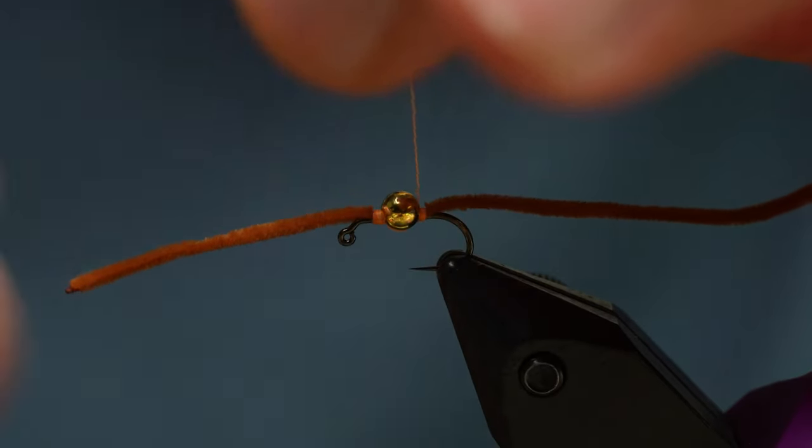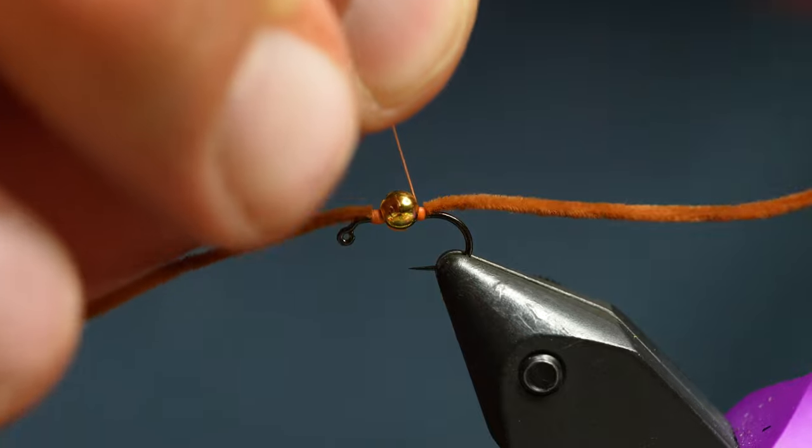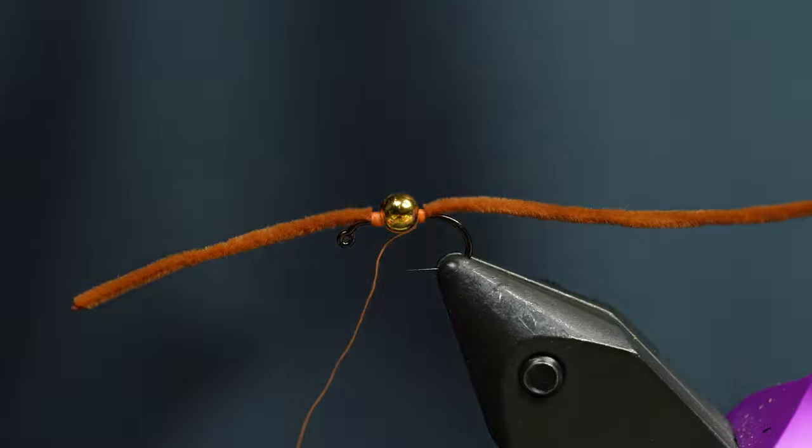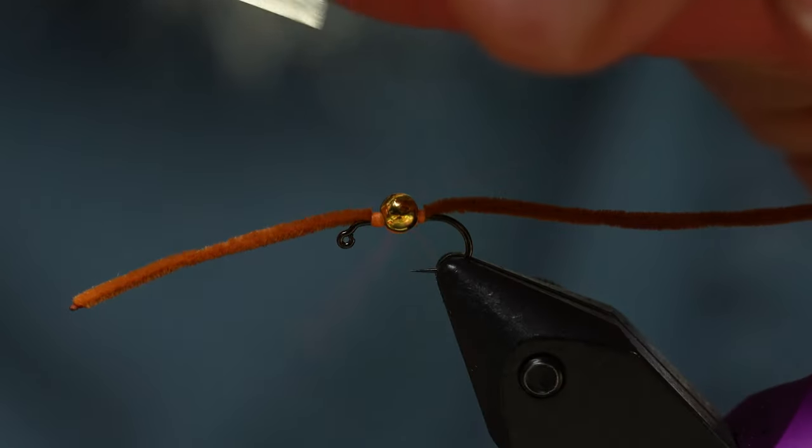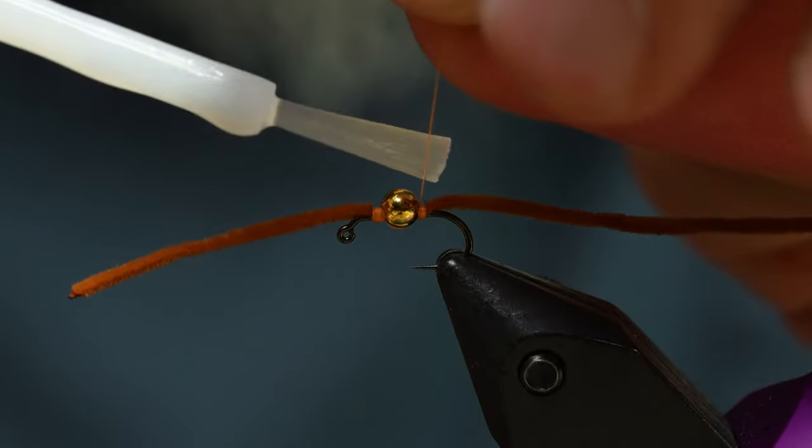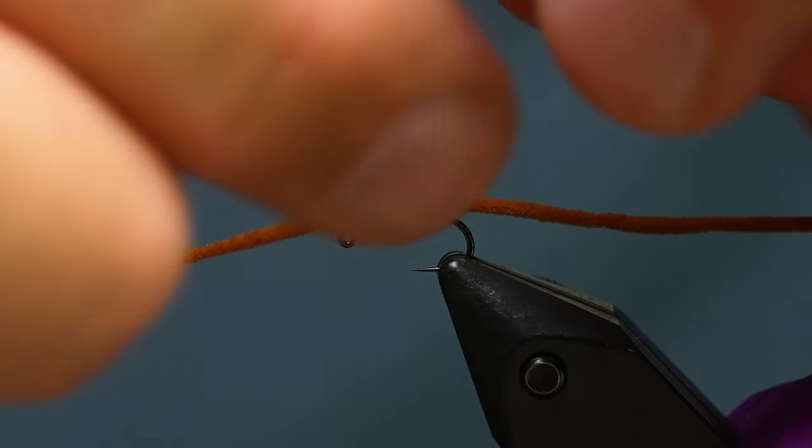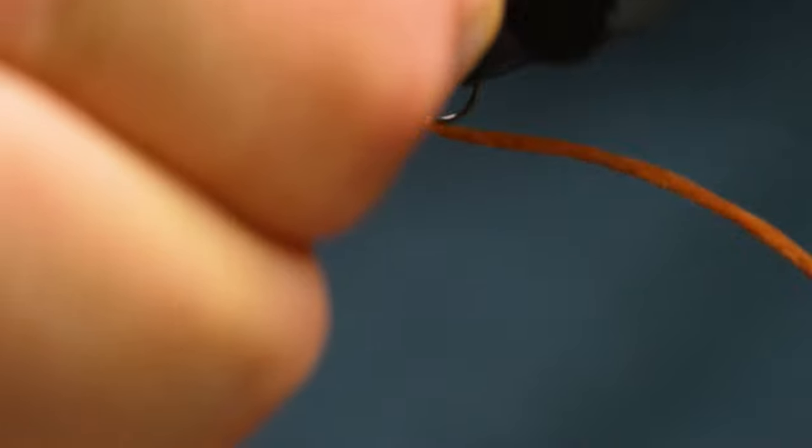That's why I always like to use a tool when I can. So if this ever happens, it's a pretty simple fix. The easiest way to do it, you take a little bit of super glue and you're just going to paint this little tag.